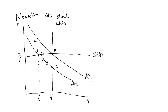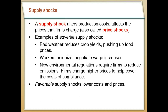We can also have changes in aggregate supply — supply shocks. All a supply shock is, is something that changes production costs, something that changes the way a firm produces in the short run. Really good examples of adverse supply shocks would be something like bad weather, a hurricane rolling through that reduces crop yields and pushes up food prices, workers unionizing and increasing the cost of inputs and labor, or environmental regulations where it's costlier for a firm to produce.